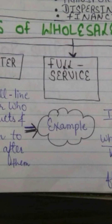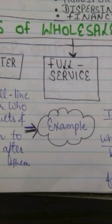Wholesalers can be classified into three categories. First is the converter — also called full-line wholesalers. They buy products from manufacturers or producers and sell them to retailers after processing them, adding value in the process. For example, if a wholesaler buys wheat in bulk from producers, they process the wheat — converting it into flour — and then sell it to retailers.